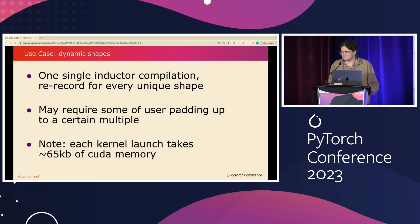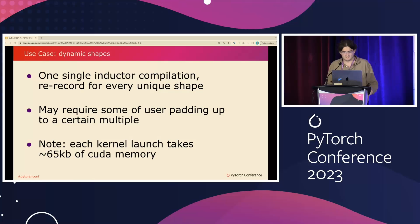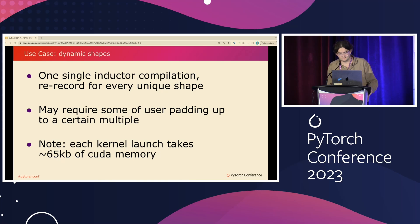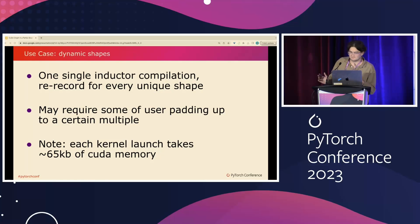Use case: dynamic shapes. Even if you have dynamic shapes in your model or are serving dynamic shapes, you can still use Cuda graphs without memory overhead. We do a single inductor compilation and then re-record a Cuda graph for every unique shape it's invoked with. Recordings are much faster than compilations, so this is feasible and works well in many scenarios. Note: each kernel launch takes 65 kilobytes of Cuda memory — this is just a Cuda issue, and there's talk about a driver fix. With really big models and a lot of compilations, sometimes this can add up.